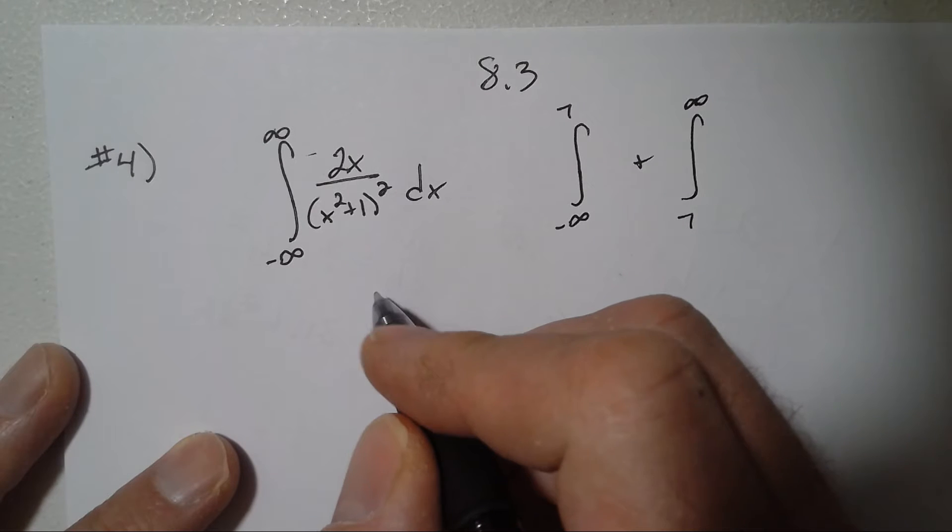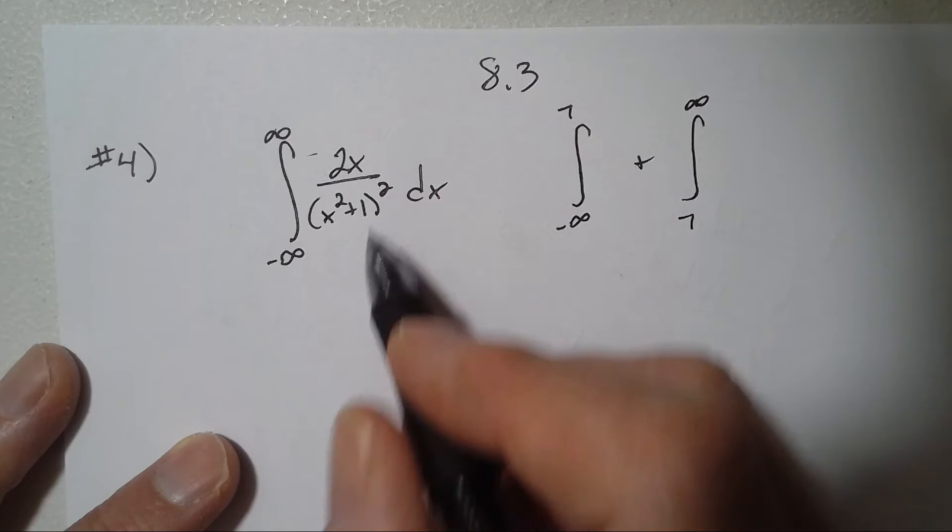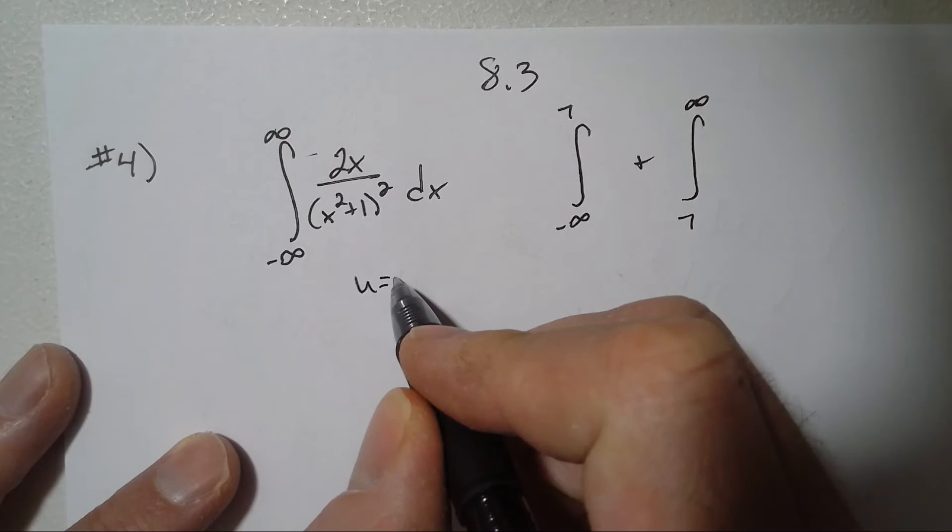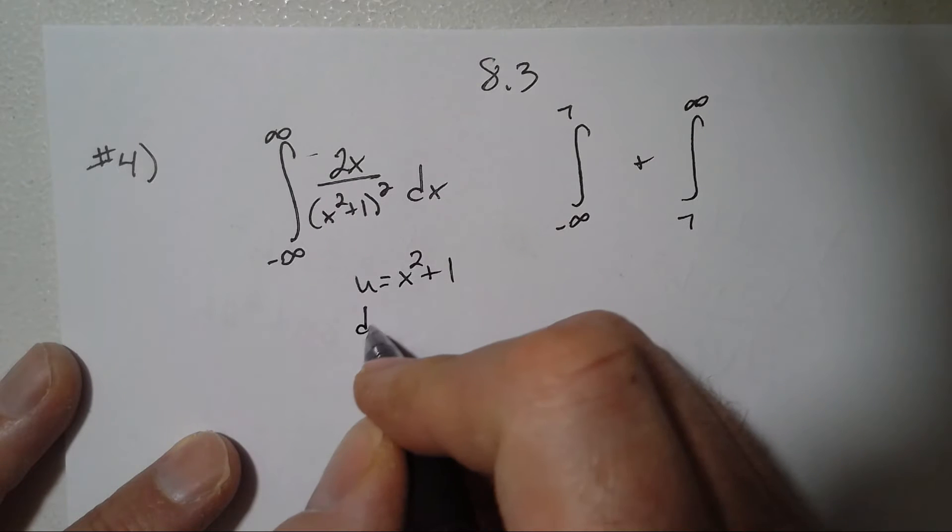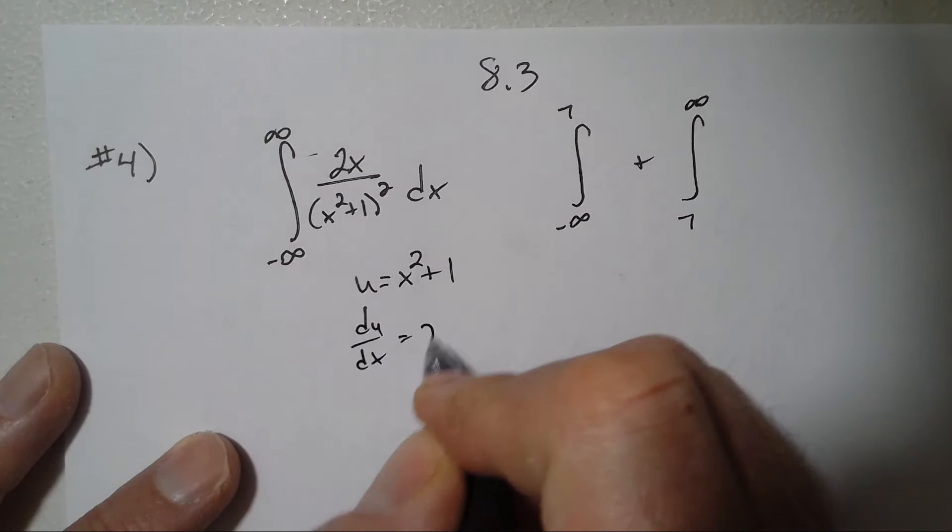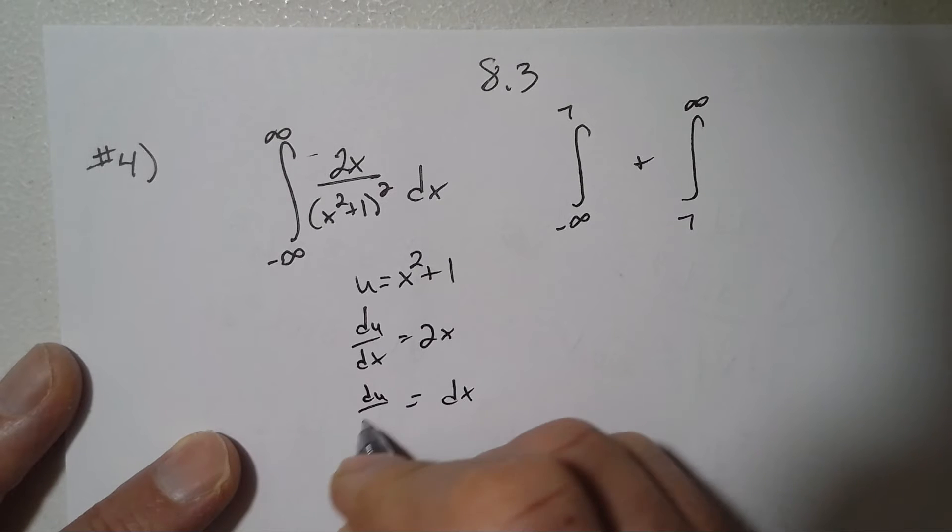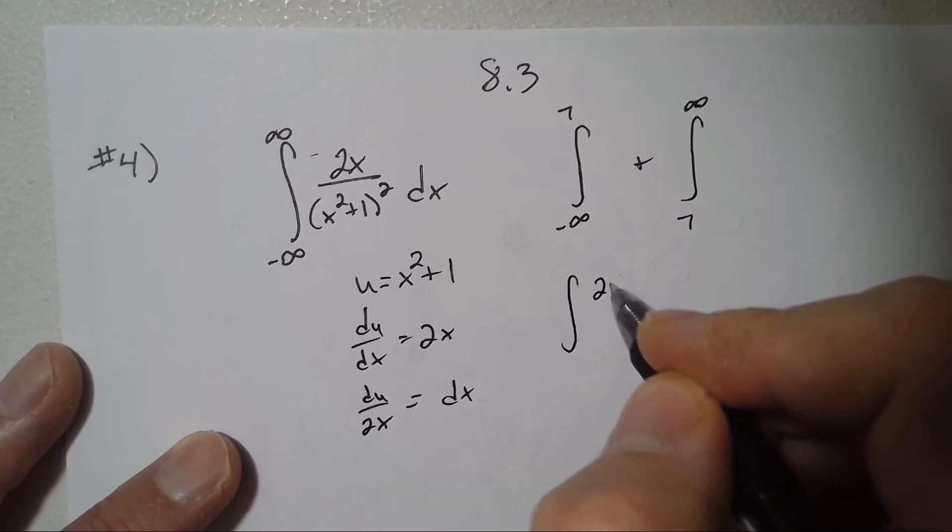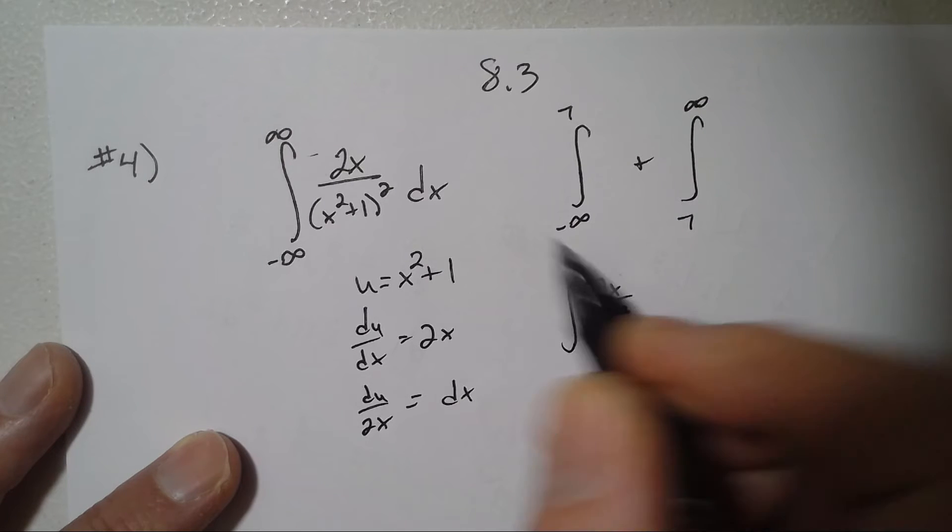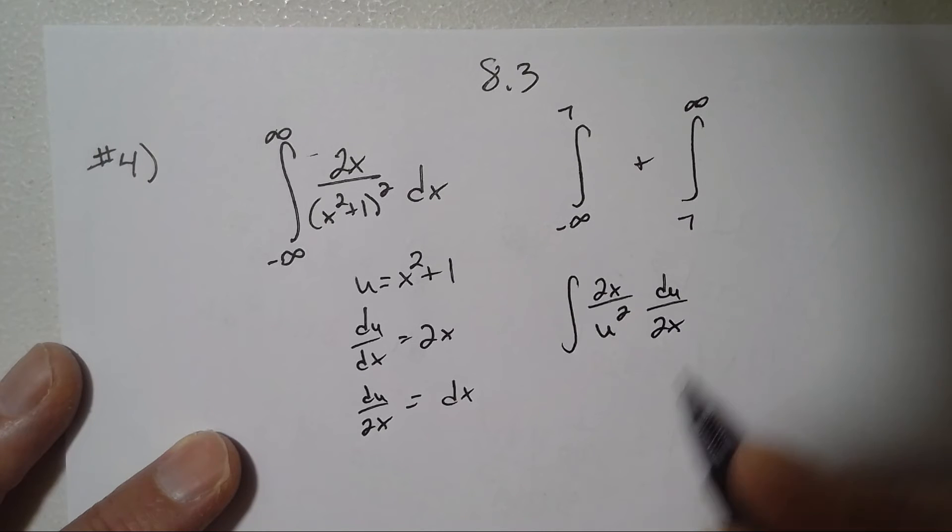First of all, I'll find the anti-derivative of this. That looks like a u-substitution, so u is x squared plus one, du/dx equals 2x, dx equals du over 2x. So it's the integral of 2x over u squared times dx, which is du over 2x, so it's the integral of 1 over u squared du.